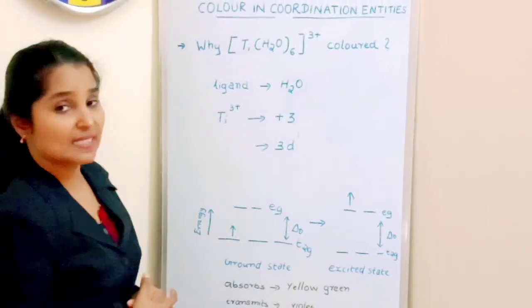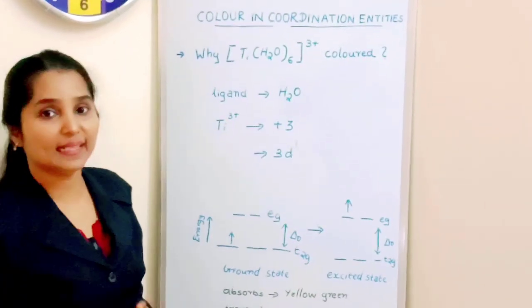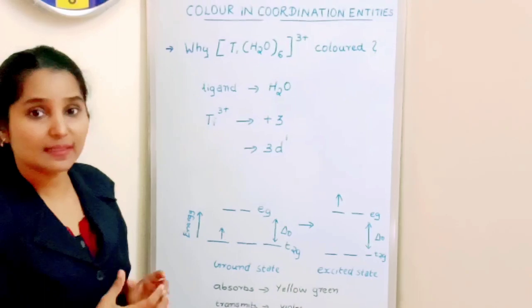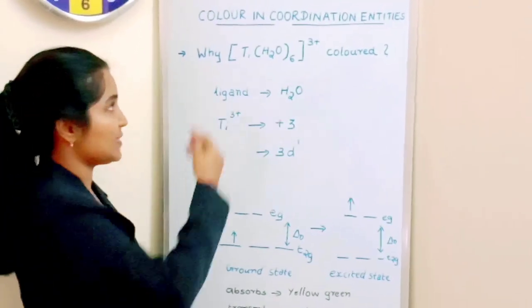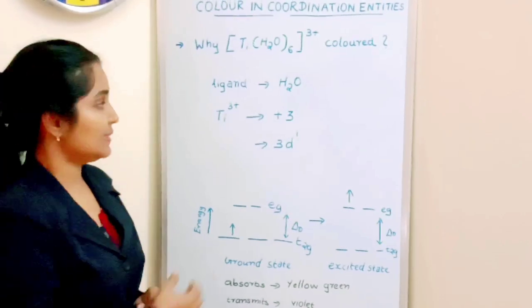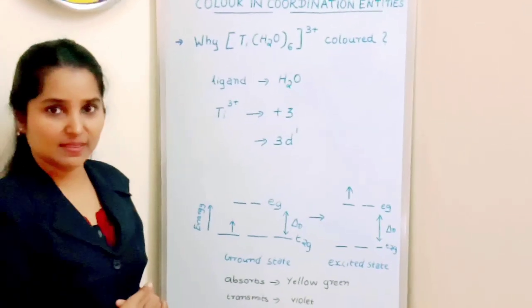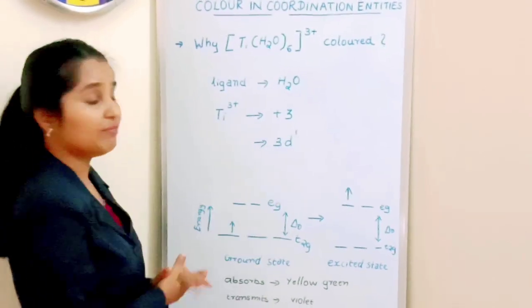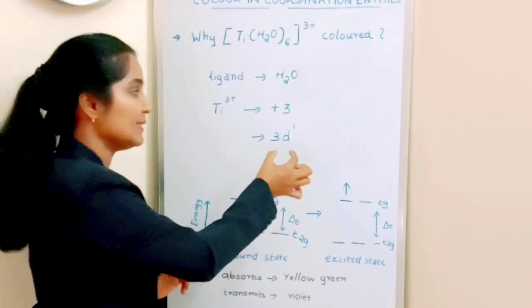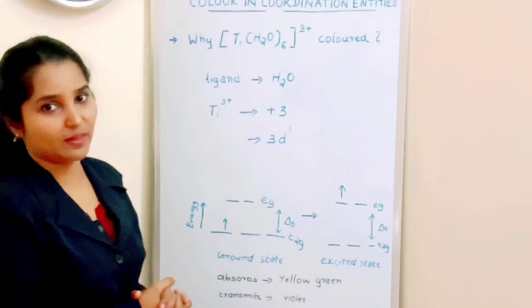Here the ligand is H2O that is present in that coordination compound. It is easy to find the oxidation state of titanium, which is +3 oxidation state. The outer d orbital of Ti^3+ will have one unpaired electron with 3d^1 electronic configuration.